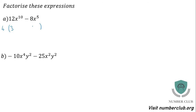How many 4s go into 12? 3. How many 4s go into 8? 2. Next, look at the signs. If they're both negative, factor out the negative. If they're both positive or one is negative and one positive, leave them as they are. You only ever factor signs when they're both negative. For the powers, you can factor out the lowest power. You've got x to the 10 and x to the 5, so factor out x to the 5. 10 take away 5 is 5, and 5 take away 5 is nothing, so you don't write anything.